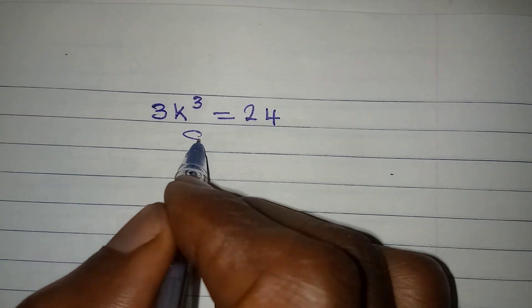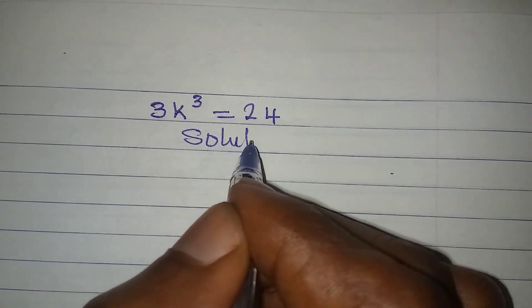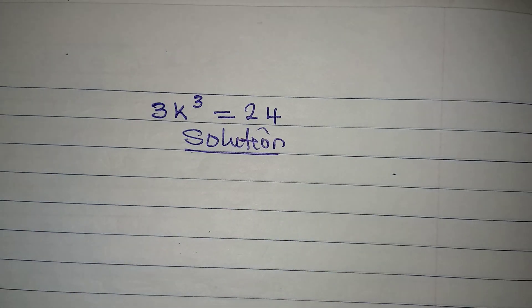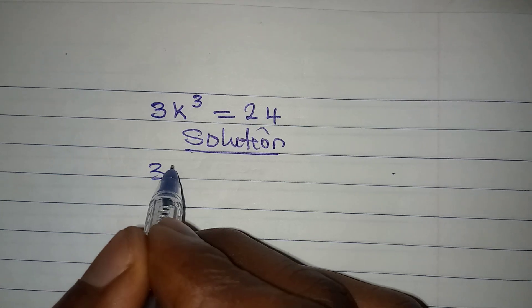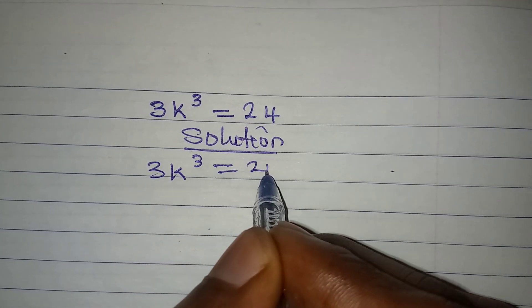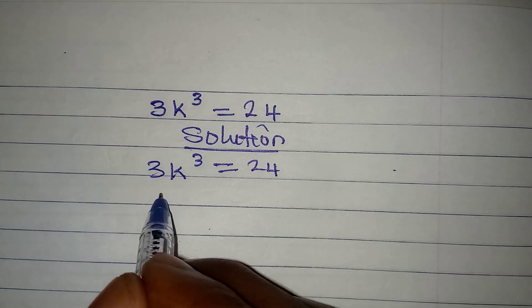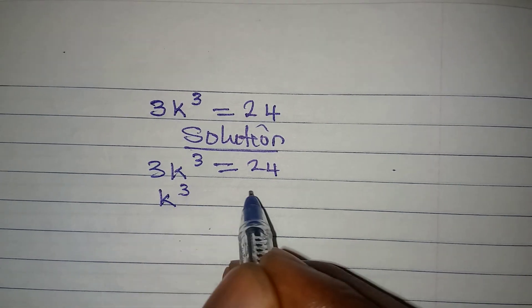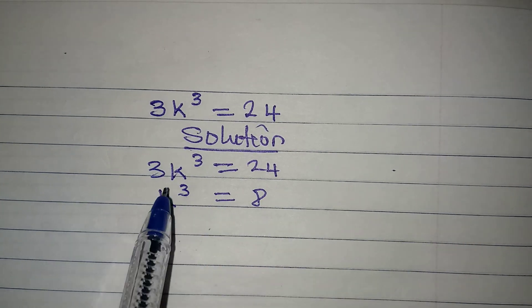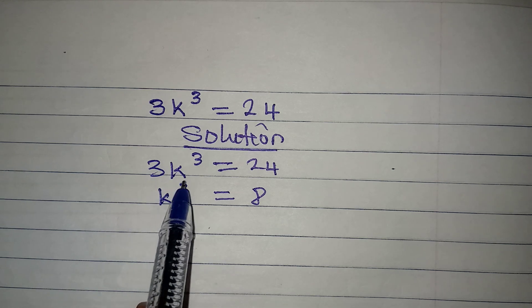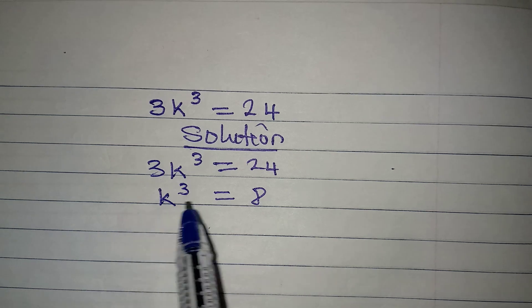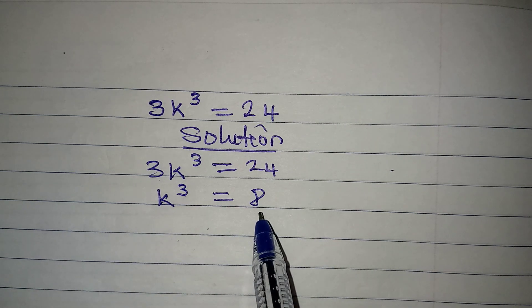Hello everyone. Let's provide the solutions to this Olympiad mathematics. 3k³ = 24. Do you know that this means that k³ is equal to 8? What have I done? Divide both sides by the coefficient of k³ and that is 3. 3 will cancel itself and 3 into 24 is 8.